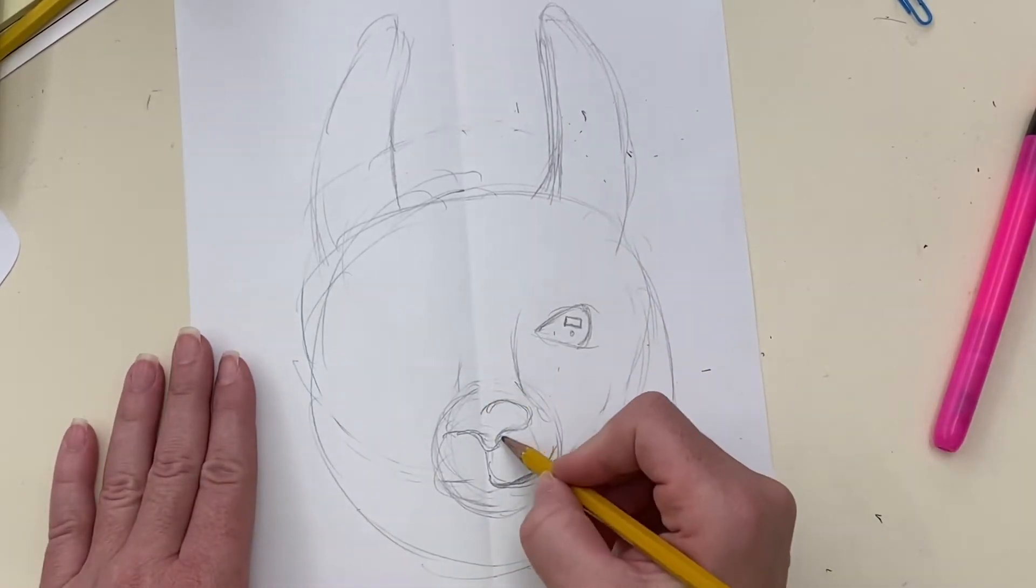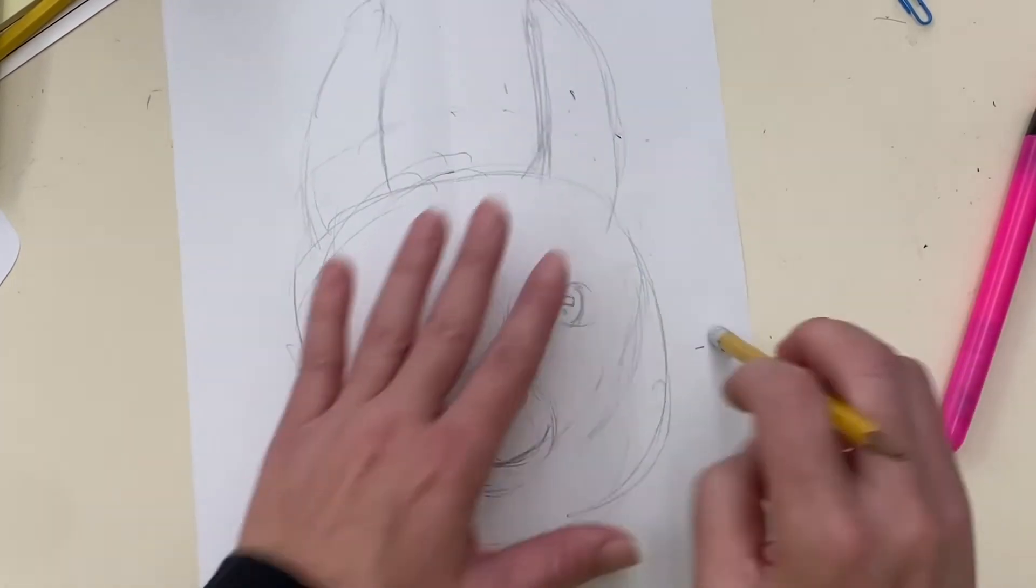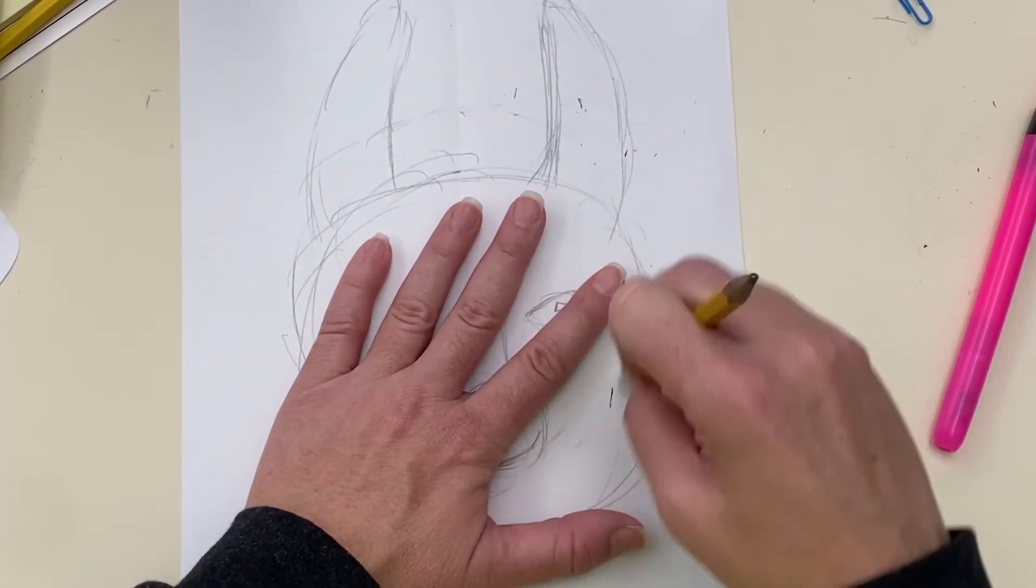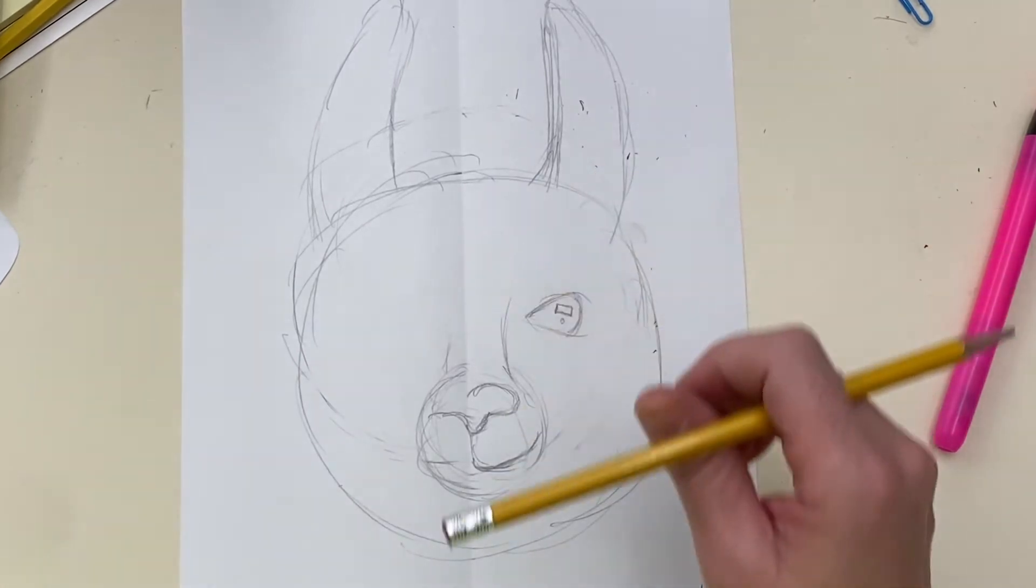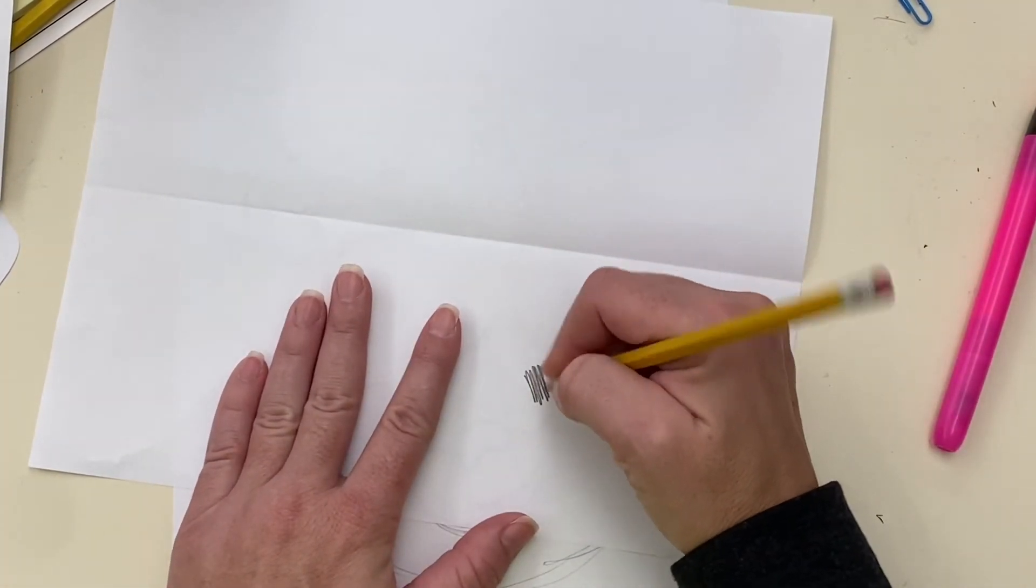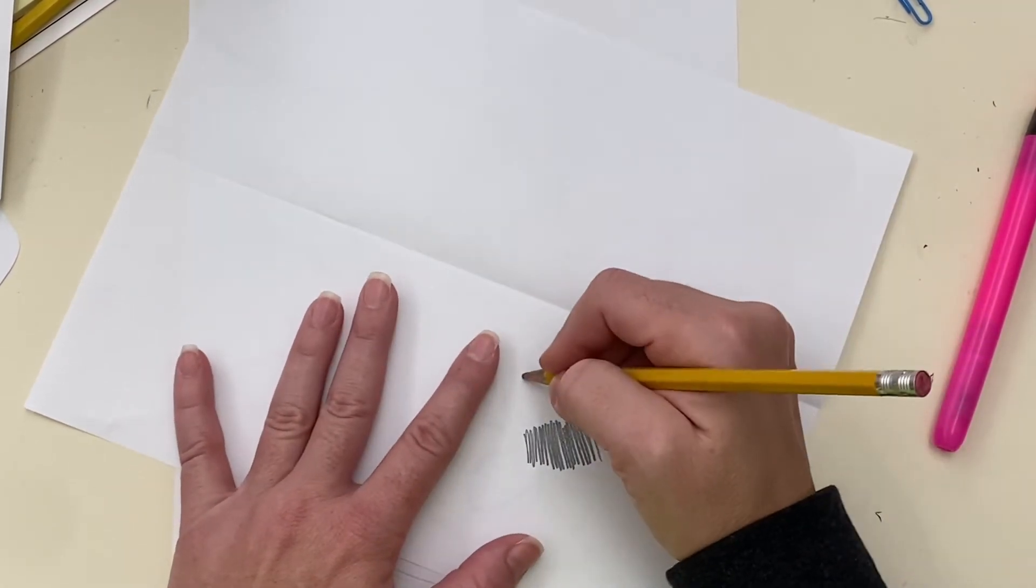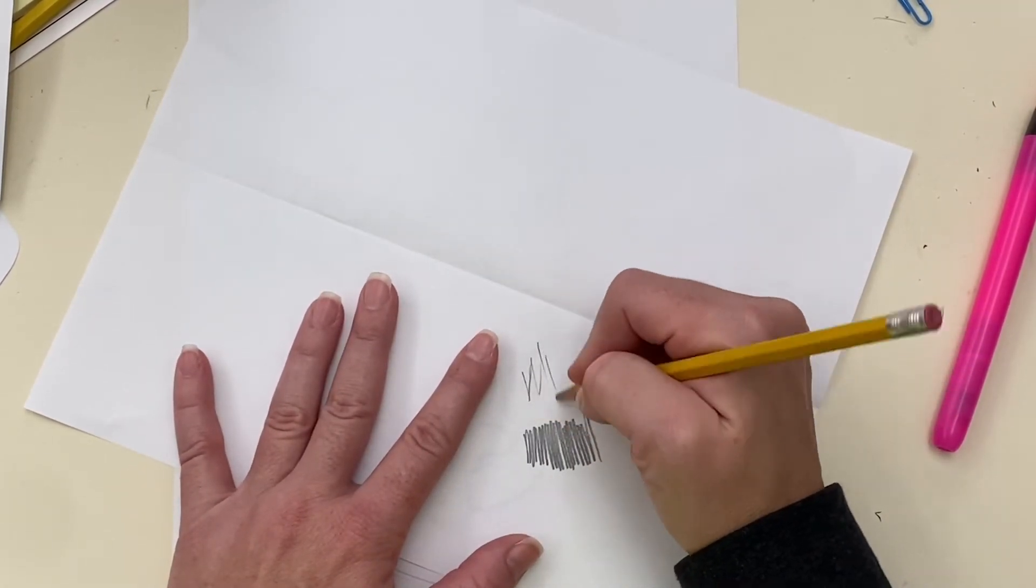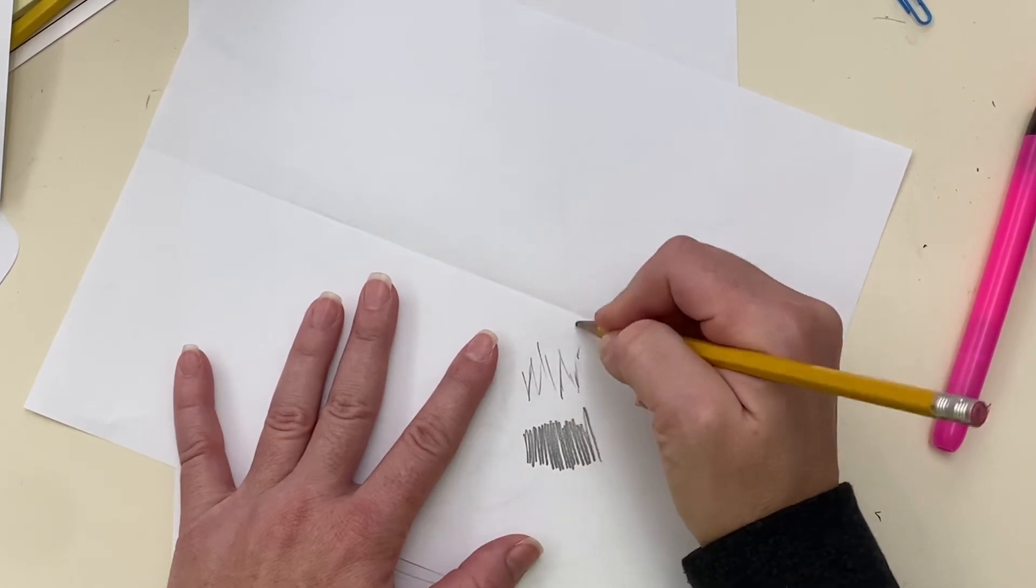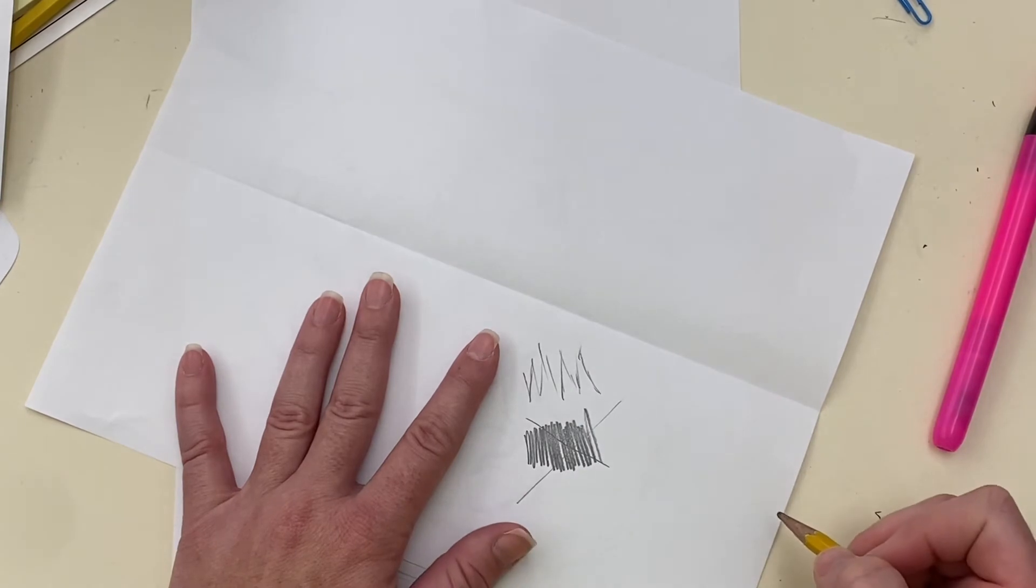So once I have the general shapes of the nose and the mouth, then you can start adding hair. So last year I had a lot of students that drew hair like this. This is not how we do hair. We do hair more like triangles and like little wispies. That's how you do hair. Not like this. If I see this I'm taking lots of points off.